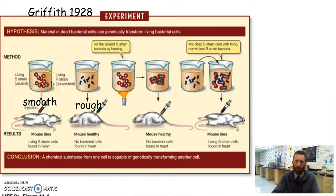So he knew that was his background. Now he wanted to see what he could do to this S strain so that it wouldn't cause the mouse to die. So he tried boiling it, right?